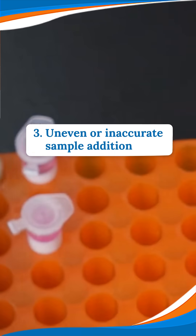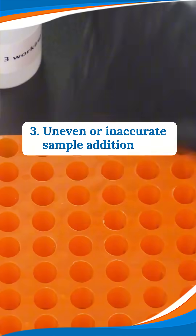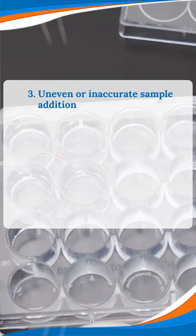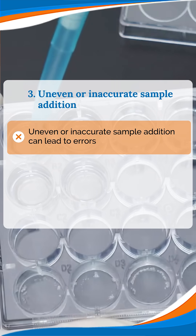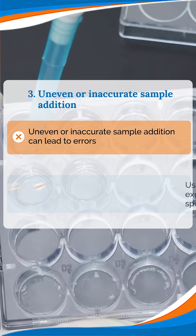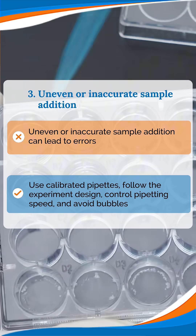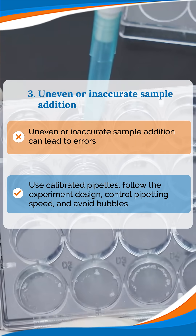Issue 3: Uneven or inaccurate sample addition can cause errors in your results. Tip: Use calibrated pipettes, follow the experiment design closely, control the pipetting speed, and avoid introducing bubbles.